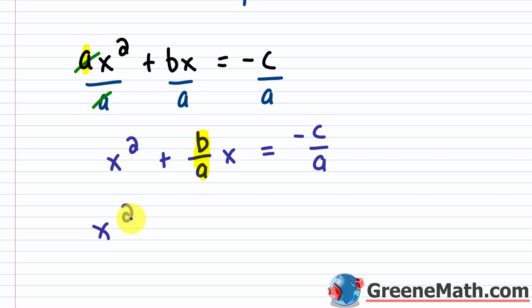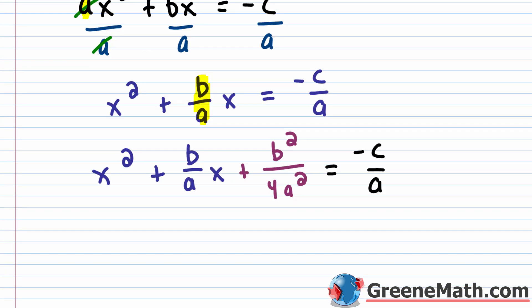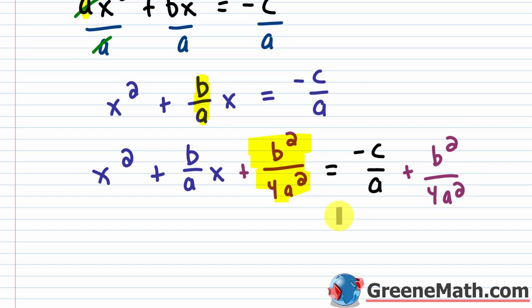So we have x² + (b/a)x, and we add b²/4a² to the left side. To keep the equation balanced, we must also add b²/4a² to the right side. Now the left side is a perfect square trinomial.